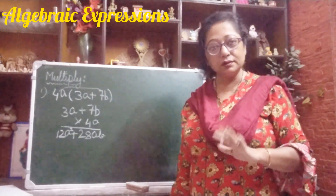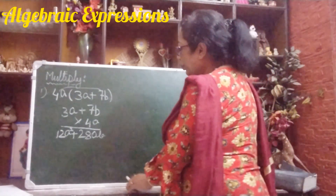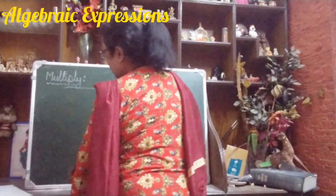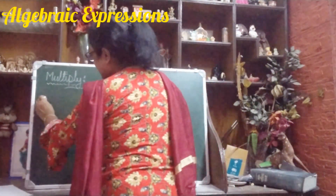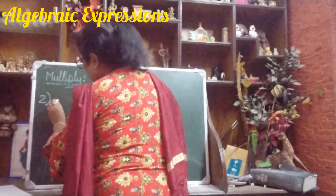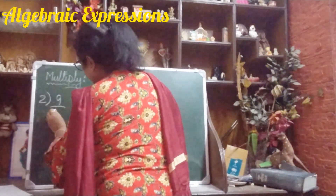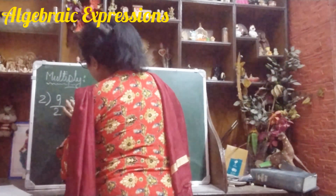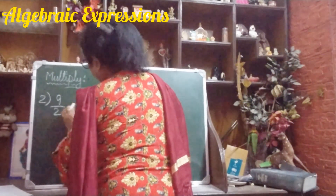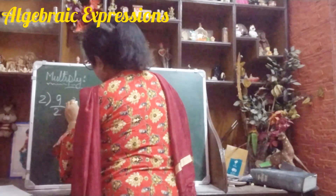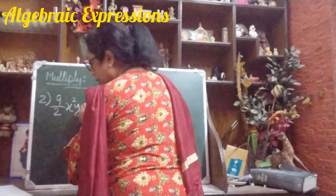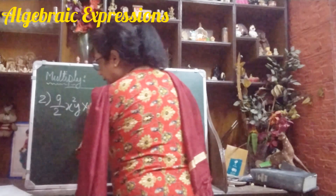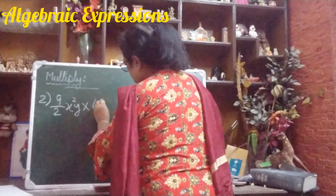Let me show you one more sum so that your concept will be clear. The second sum is: 9 by 2 x squared y, multiplied by x plus 2y.